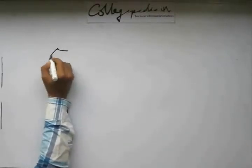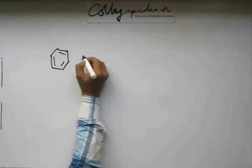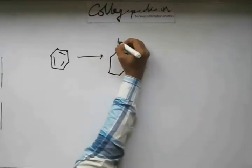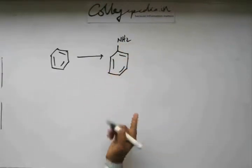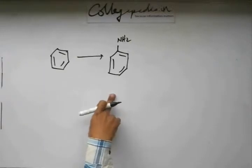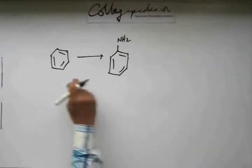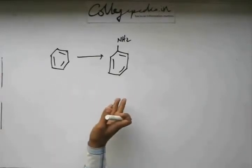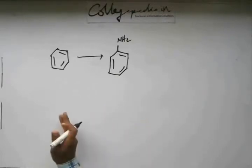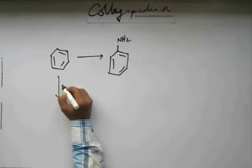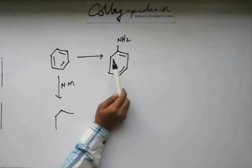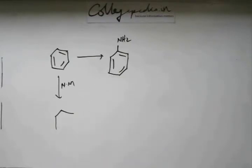From benzene, if you have to prepare aniline, once you prepare aniline you can prepare diazonium salt, and from there you can prepare various other compounds. There is no direct method for bringing an amine group onto benzene — no reaction we have studied for that. So the amine group cannot be brought directly onto benzene.